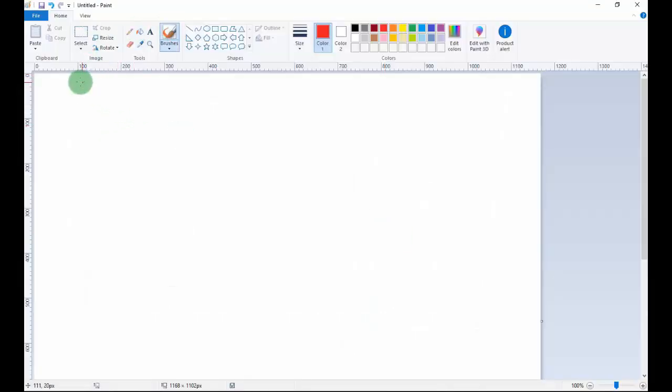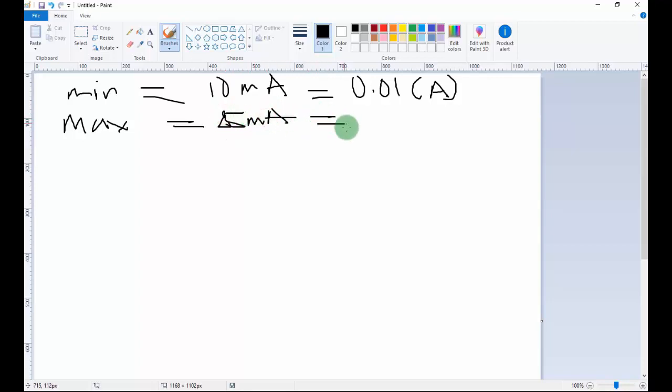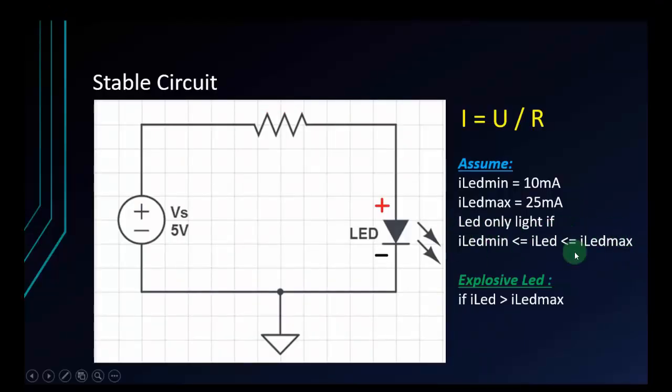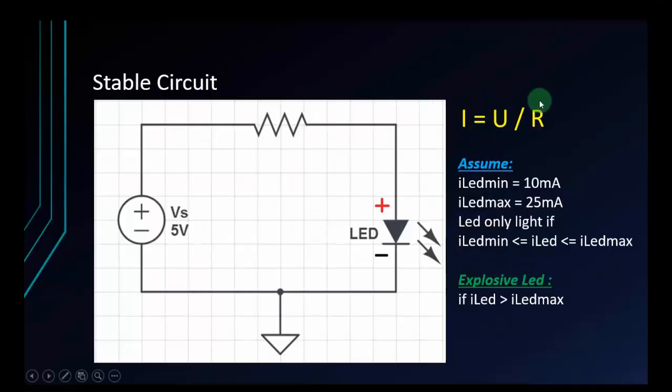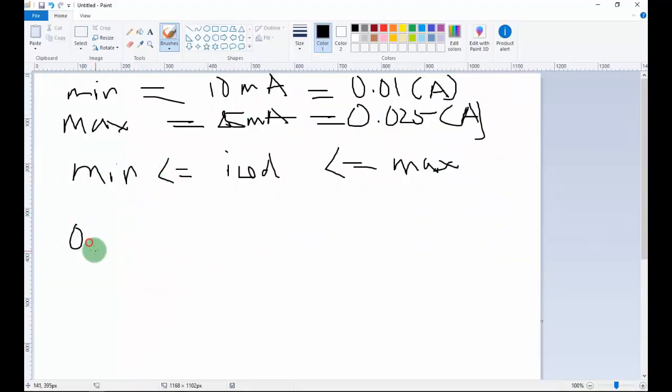We'll try to calculate the variable of resistor. Let's start. We have I_mean is 10 milliampere, which is also 0.01 ampere. And I_max is 25 milliampere, also 0.025 ampere. We have I_mean lower than I_LED lower than I_max. And I_LED right here is U divided by resistor.